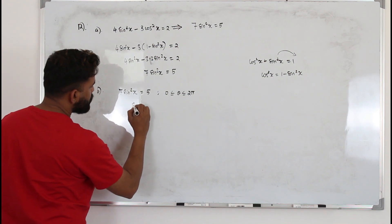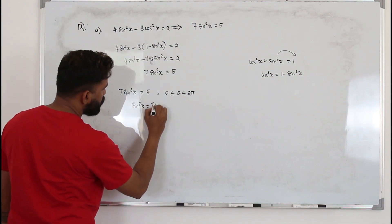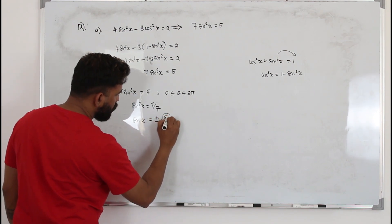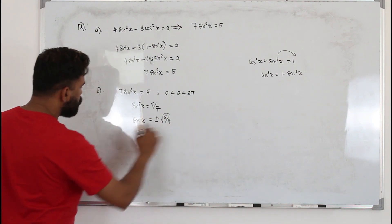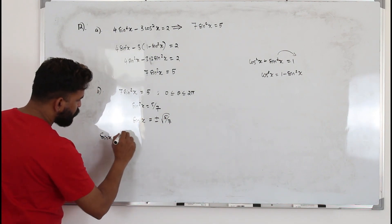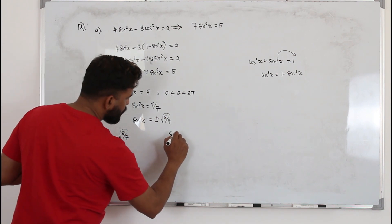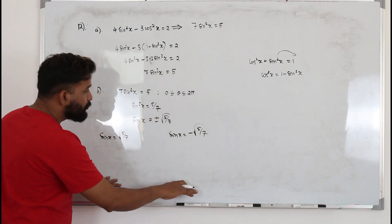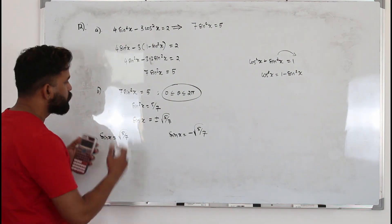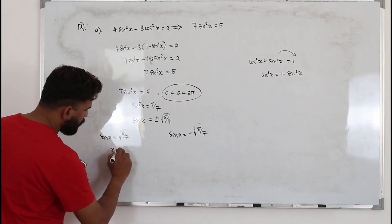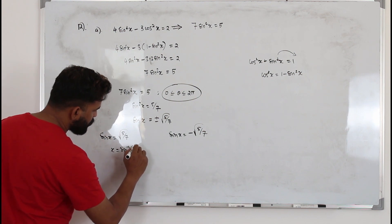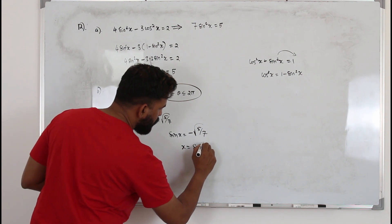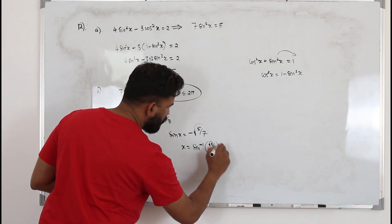Bring 7 to the other side: sin²x = 5/7. Take the square root of both sides: sin x = ±√(5/7). This gives two separate equations. The principal value is the same for both, since we use the positive value: x = sin⁻¹(√(5/7)).